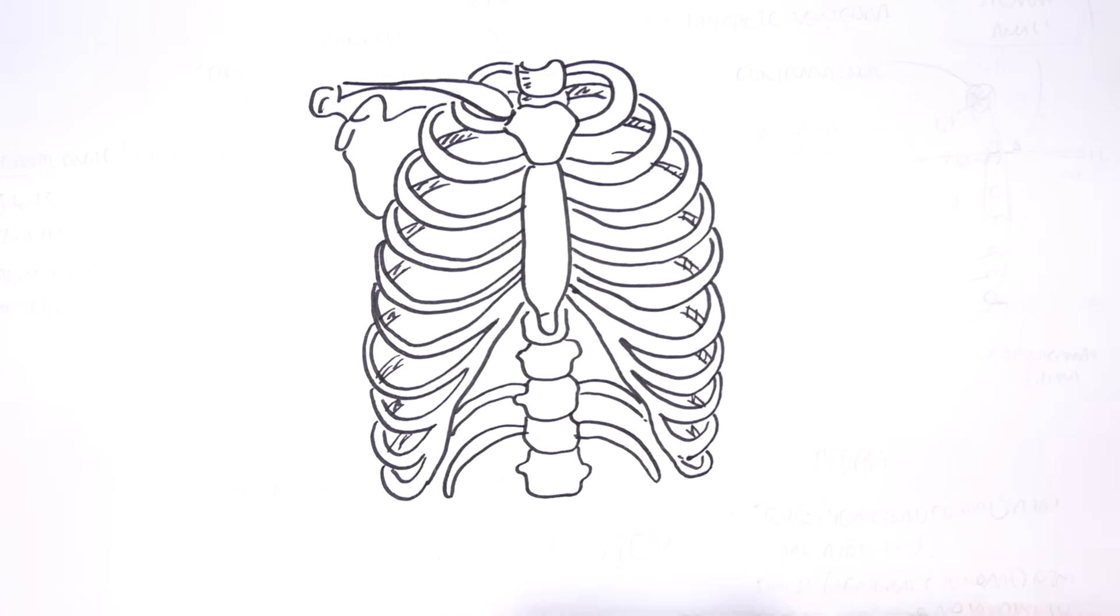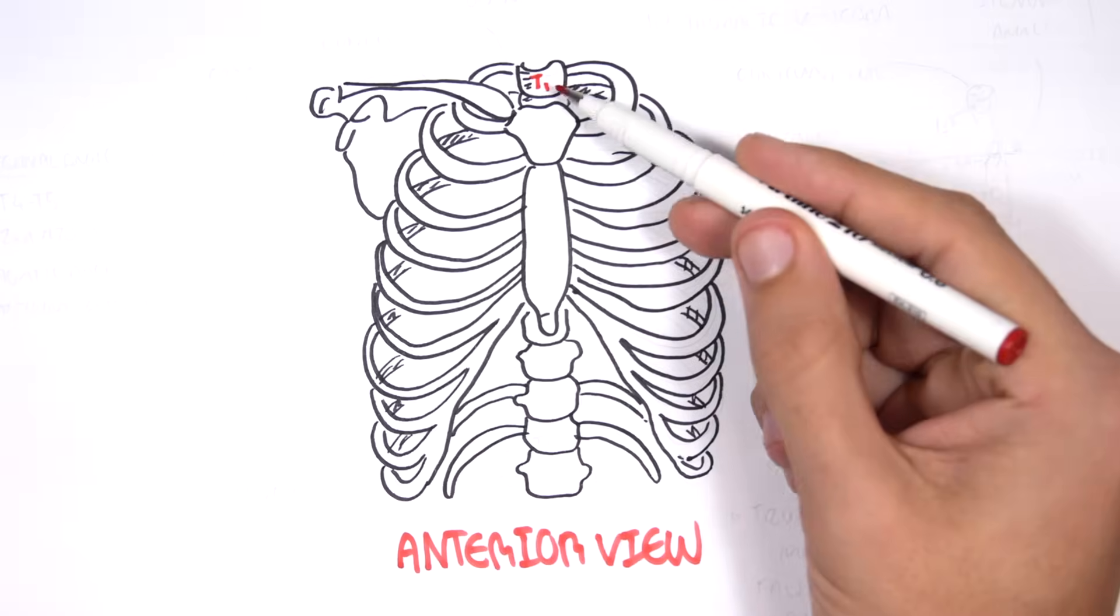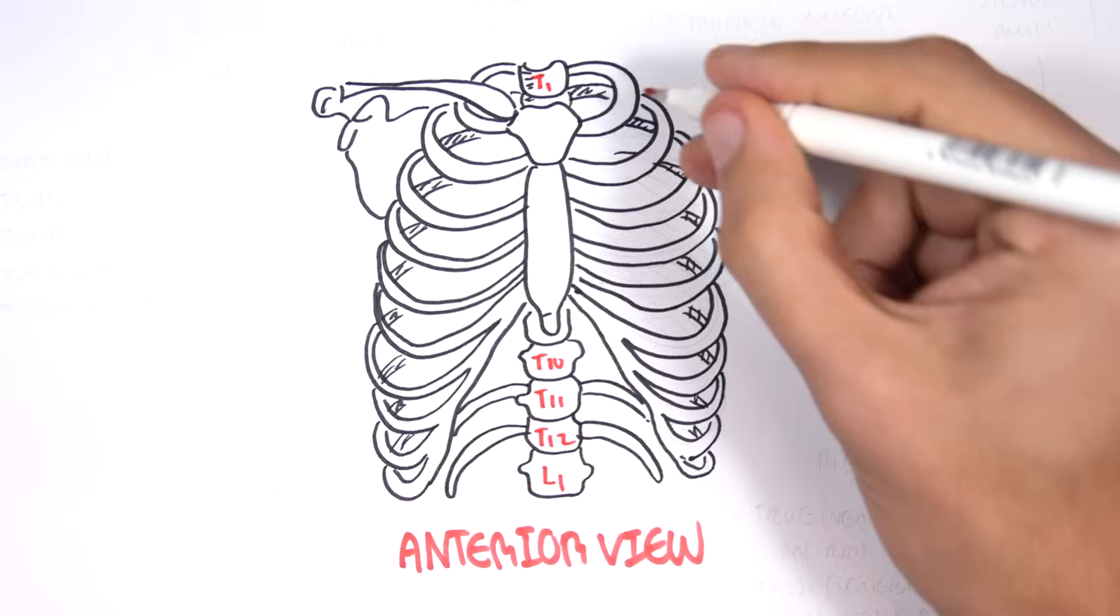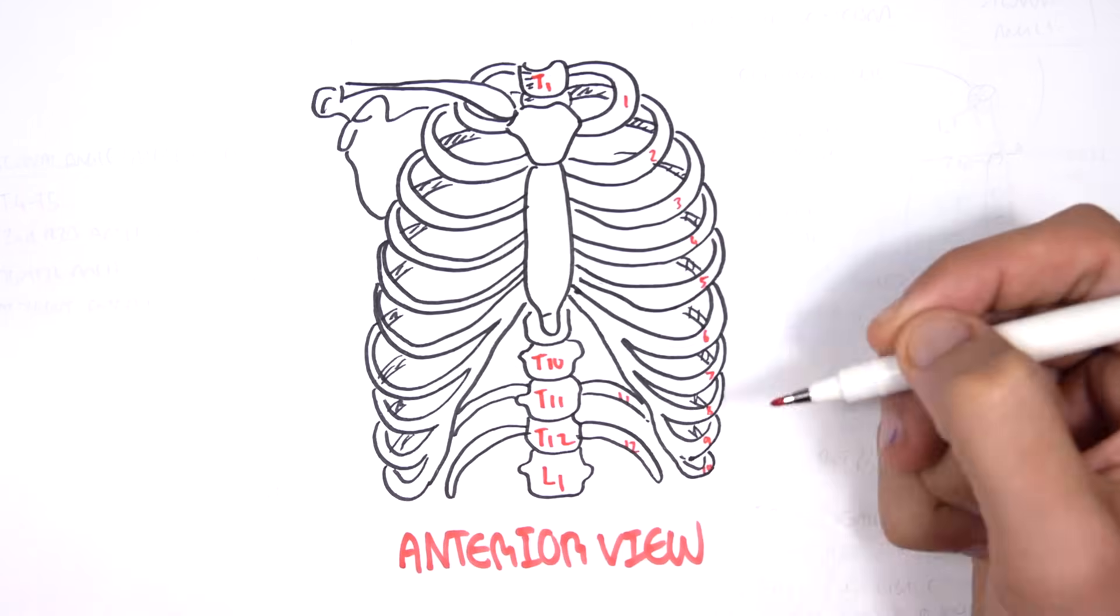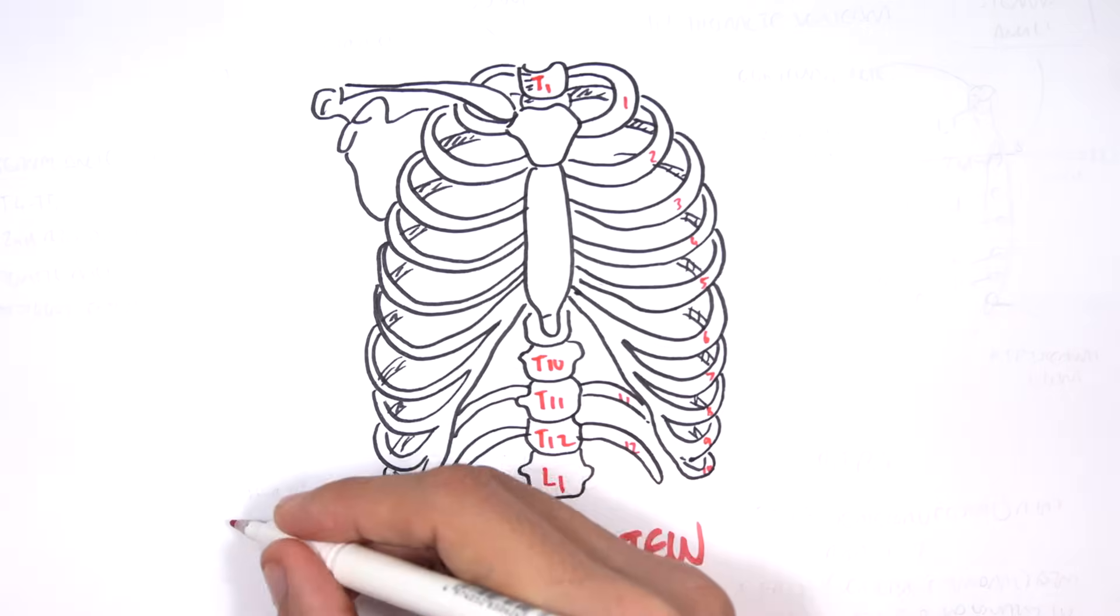And here at the back is our vertebrae, the thoracic vertebrae. We have 12 in total, so T1 all the way to T12. And I'm also adding the lumbar one, the lumbar vertebrae number one.